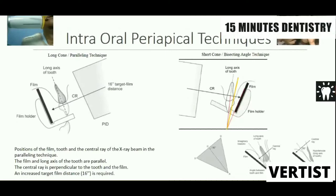Now we come to internal periapical techniques — basic internal periapical techniques: the long cone parallel technique and the short cone bisecting angle technique. In the long cone technique, the film is held in a film holder and positioned parallel to the long axis of the tooth, and the central ray is directed exactly at 90 degrees. This is known as the long cone or parallel technique.